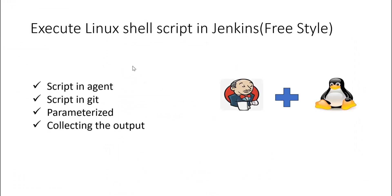In this video we have seen how to execute a shell script present in a Jenkins agent, how to execute a shell script from GitHub, how to send parameters to a script, and how to capture the output from a script to exit the job with a success or failure message. I hope this video helps. Thanks a lot for watching.